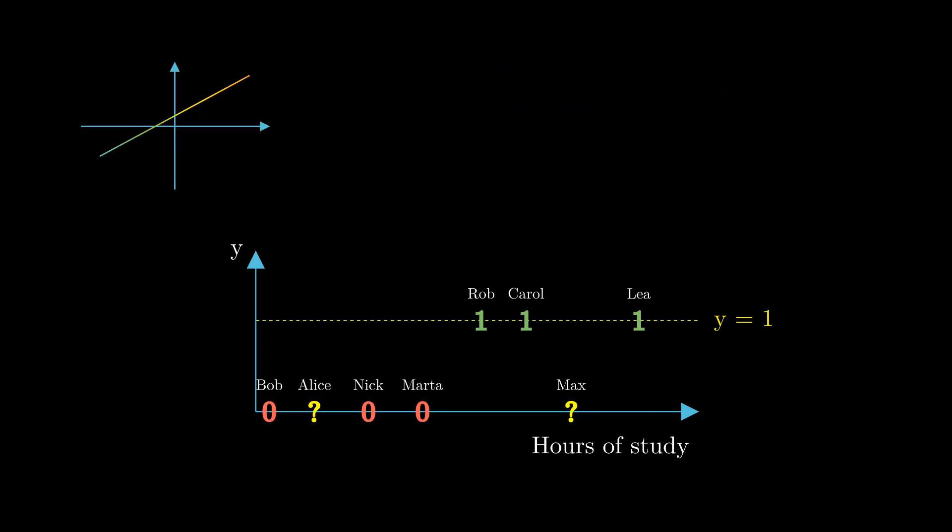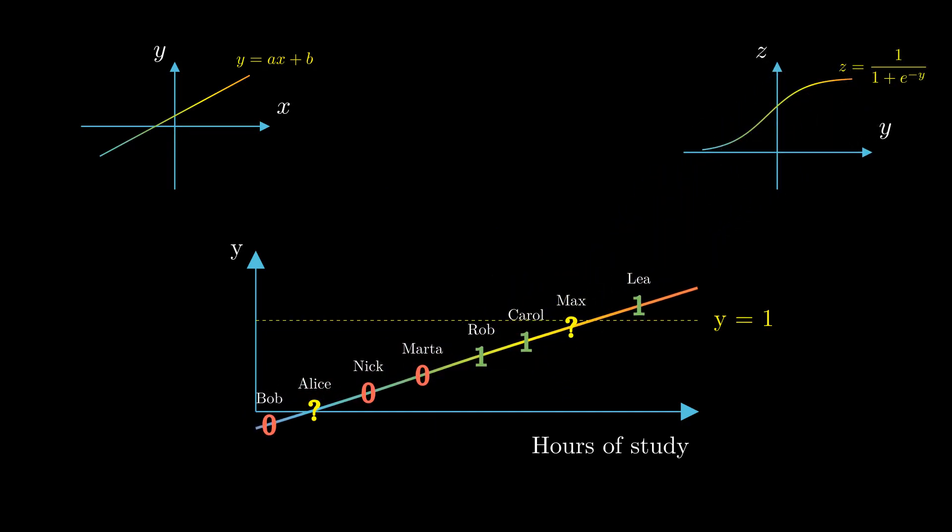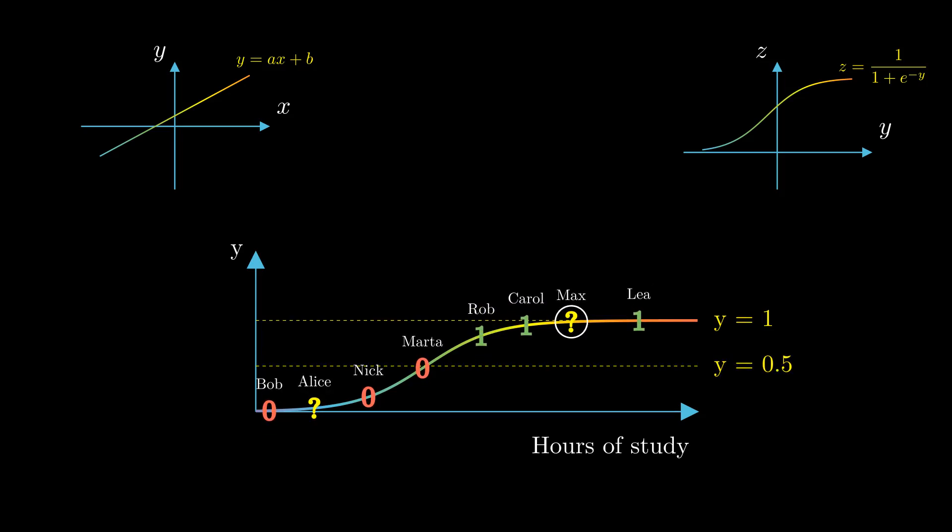Logistic regression first applies a linear function to our data points, then it distorts this linear function using the sigmoid. Finally, to predict each student's result, we move their point vertically until it meets the line. We predict pass for all students that landed above the height of 0.5 and fail for everyone below that height.